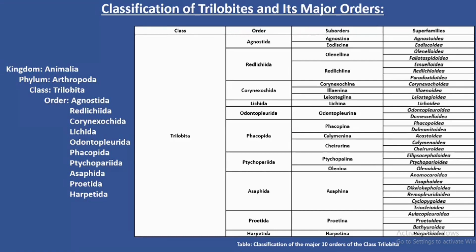Since the class Trilobita is divided into 10 major orders, here we can see that the 10 major orders have been subdivided into suborders, and these suborders have been further subdivided into some superfamilies.